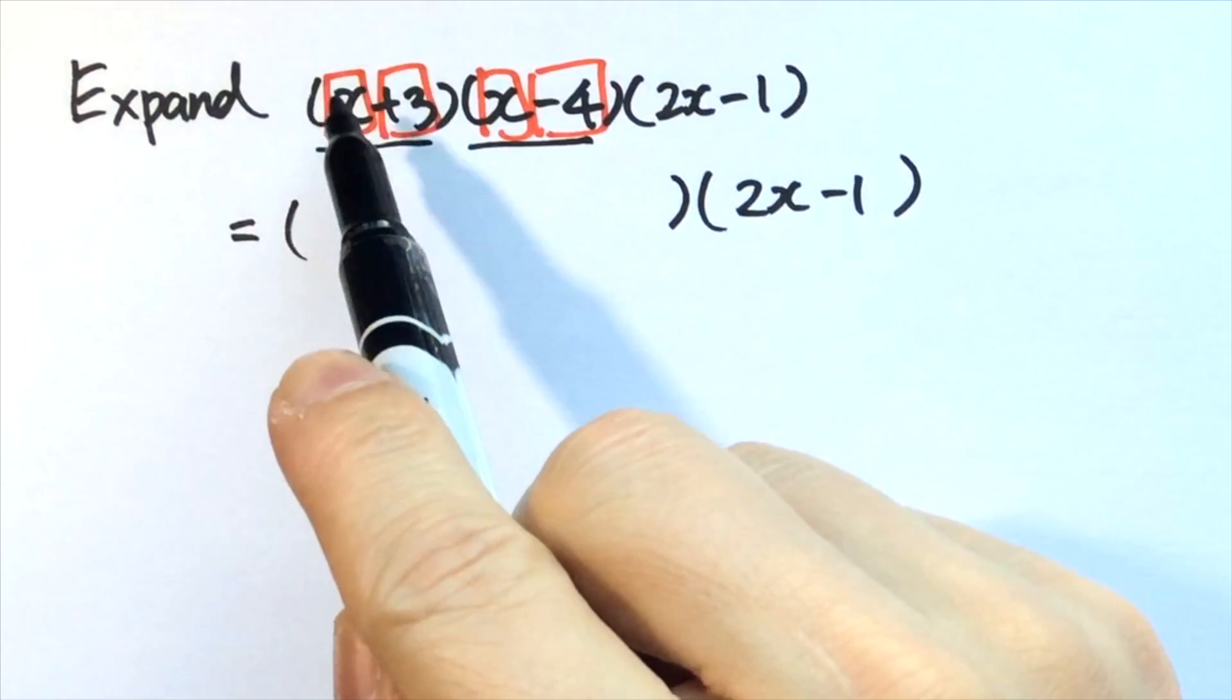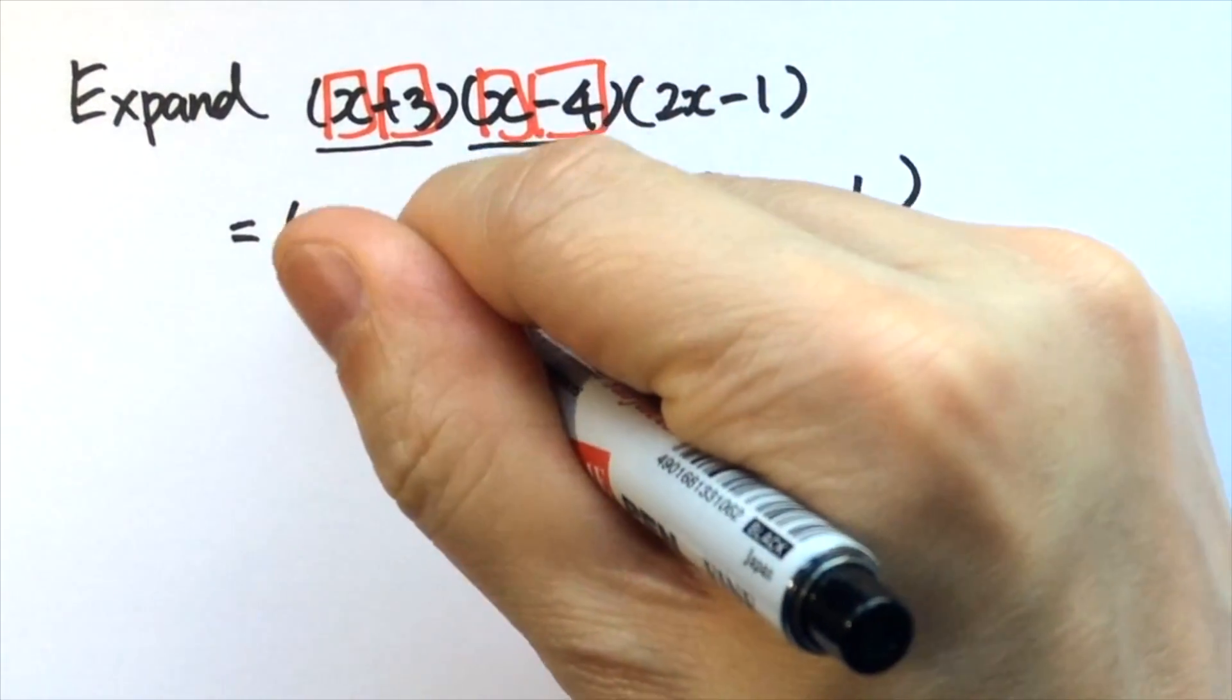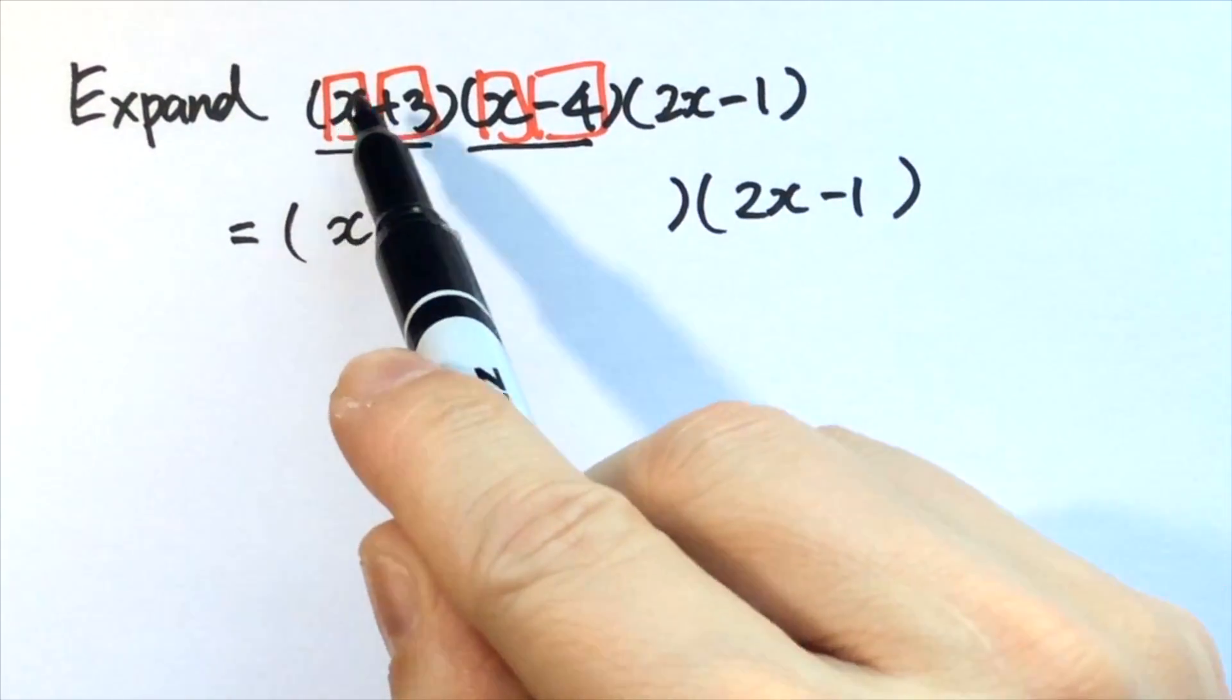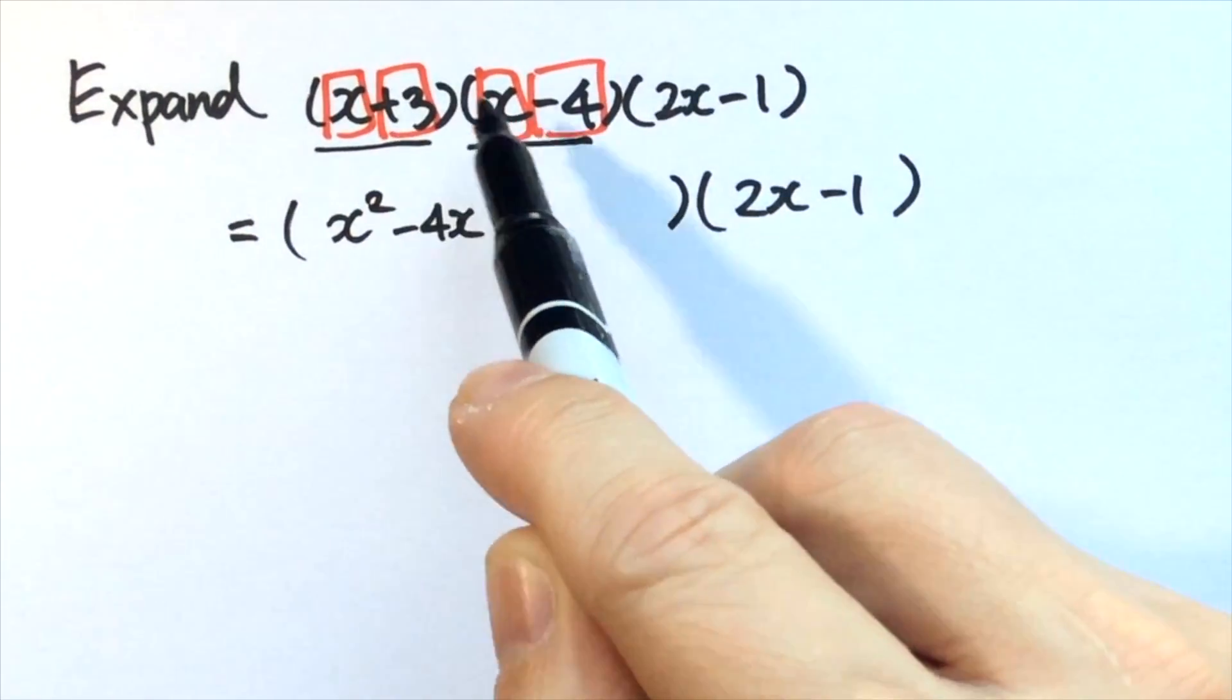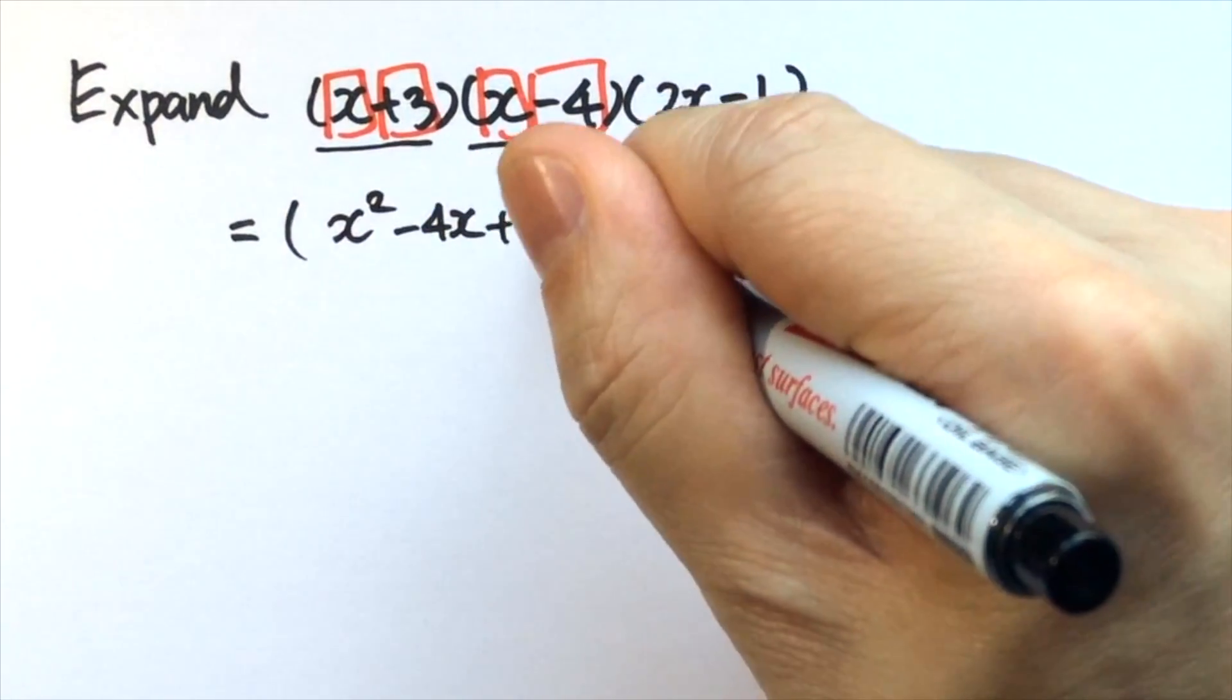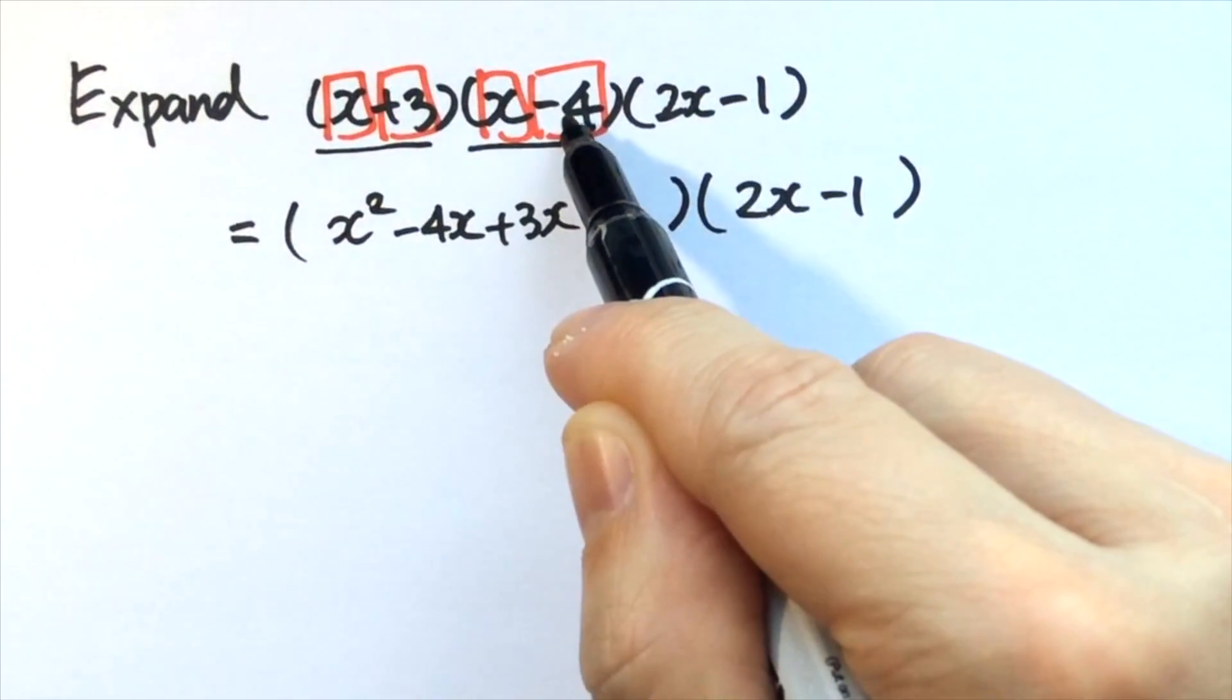Now we chunk the terms. So x times x gives x squared, x times negative 4 gives minus 4x, plus 3 times x gives plus 3x, plus 3 times negative 4 gives negative 12.